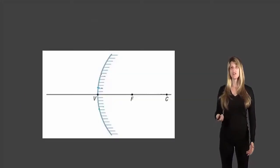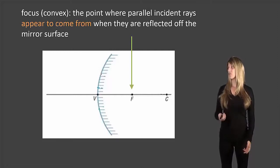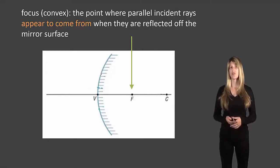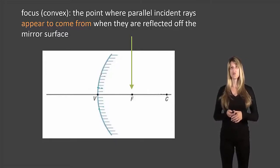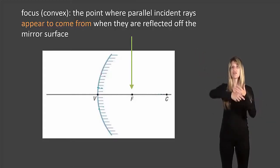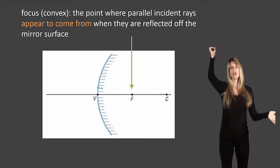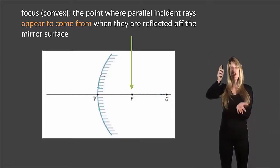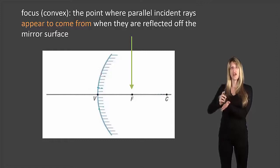And if we take a look at the focus of a convex mirror it's the point where parallel incident rays appear to come from when they are reflected off the mirror surface. So in this case when parallel incident rays hit the mirror they're actually going to separate further apart. They're not ever going to converge. They're going to separate further apart. But if we backtrack and go to on the other side of the mirror it's as if those rays actually crossed at a point and that's the focus.